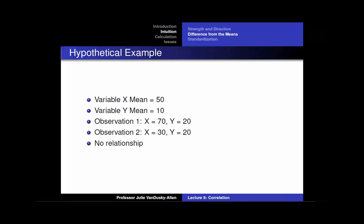Next, consider the next two variables, variable x and variable y. The mean of variable x is 50 and the mean of variable y is 10. In observation 1, x is 70 — above the mean of x — and y is 20 — above the mean of y. For observation 2, x is 30 — below the mean of x — and y is 20 — above the mean of y. This implies that there is no relationship between x and y: there is no consistent pattern in how each individual observation deviates from the means of x and y.